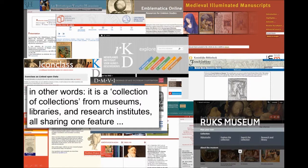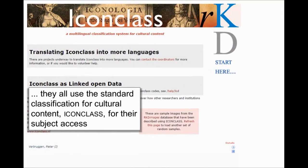In essence, Archives is a collection of collections from different types of institutions. We have material from museums, libraries, research institutes, and archives. In all, we have about 15 institutions from which we currently have material. What they all share is that they use a standard classification for cultural content — iconclass — which is an open data tool. It's linked open data, available to everyone, and used in several hundreds of institutions across the world.